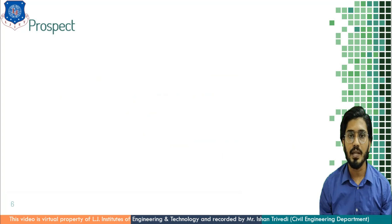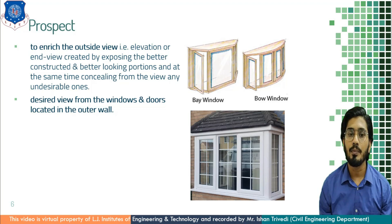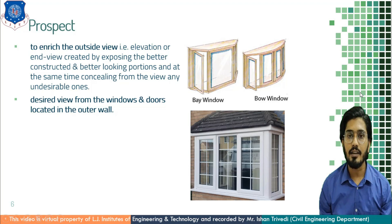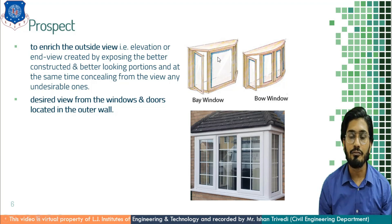Now let us understand the second principle of building planning, that is Prospect. Prospect is to enrich the outside view — from the inner side of a room, how we can have the benefit of the outer side. It is the elevation or end view created by exposing the better construction and better-looking portions, and at the same time concealing from view any undesirable ones. Best desirable view can be achieved by locating doors and windows in the outer wall. By providing a bay window, you can have the benefit of three-side vision — front and either side. The bay window can be square, rectangle, or circular.